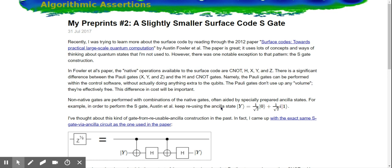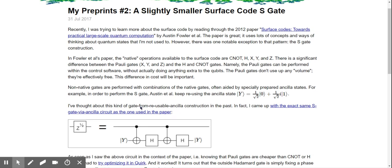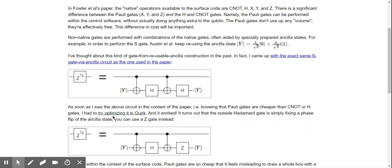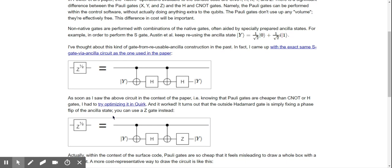Non-native gates are performed with combinations of the native gates, often aided by specially prepared ancilla states. For example, in order to perform the S gate, Austin keeps reusing the ancilla state.